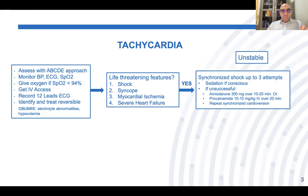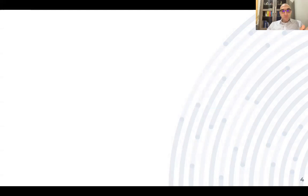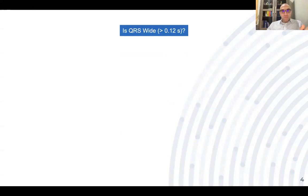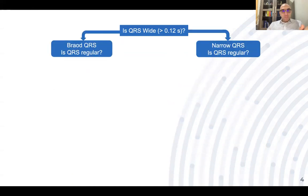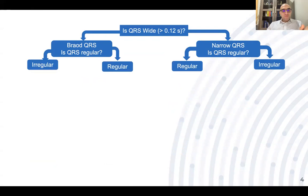If the patient has no life-threatening features — no shock, no syncope, no myocardial ischemia, no heart failure — then the patient is stable. For a stable patient, ask yourself: what is the width of the QRS? Is it wide or narrow? Wide QRS is more than 0.12 seconds or 120 milliseconds. Then ask: is it regular or irregular?